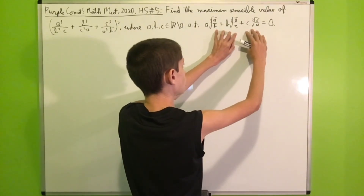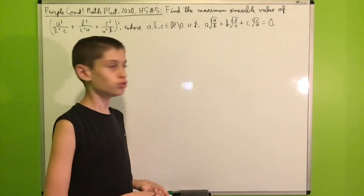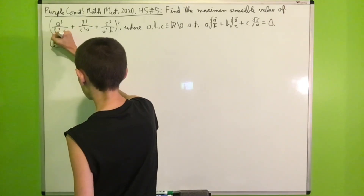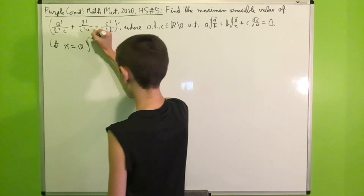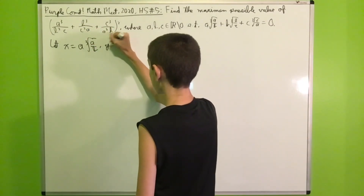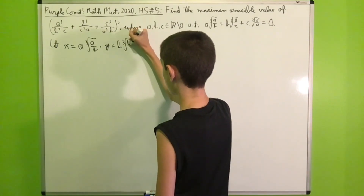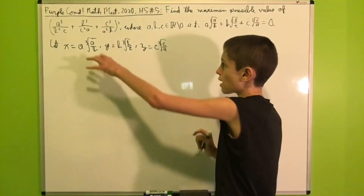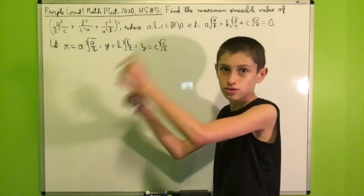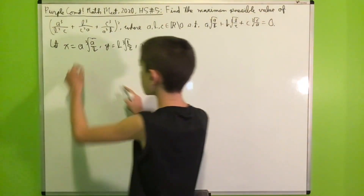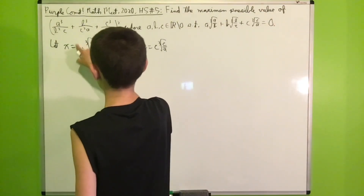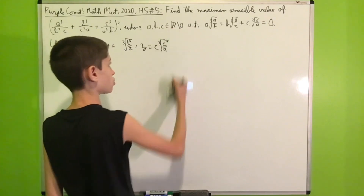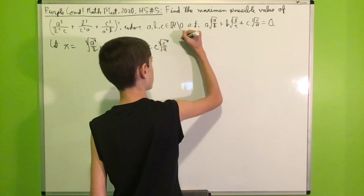First, I would like to focus on the constraint expression and get rid of all of those cube roots. We let x = a·∛(a/b), y = b·∛(b/c), and z = c·∛(c/a). We can bring the outside factors inside the cube root by cubing them, giving us the cube root of a⁴/b, the cube root of b⁴/c, and the cube root of c⁴/a respectively.